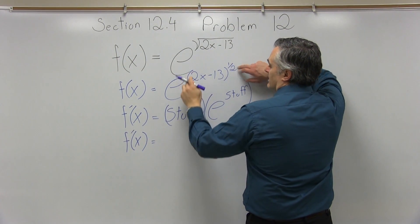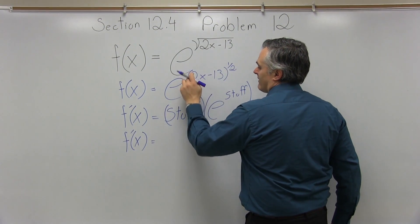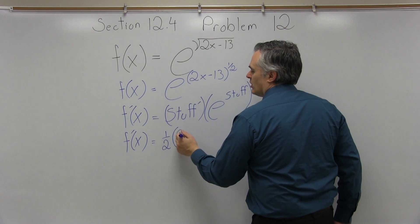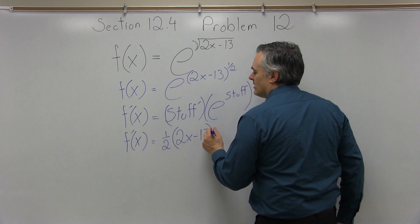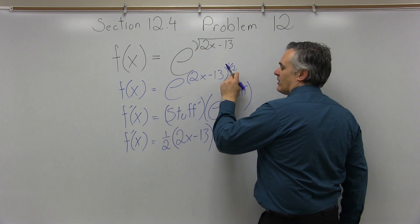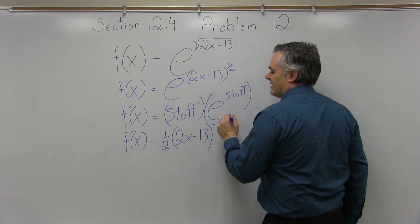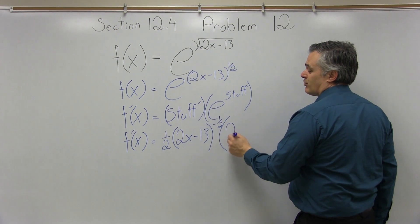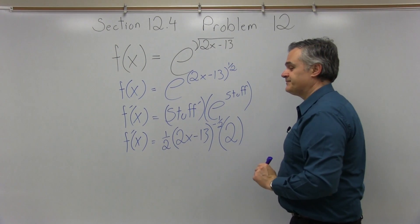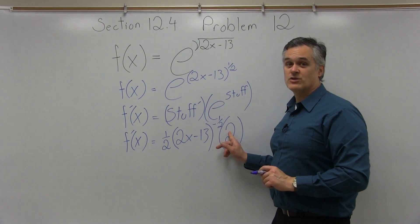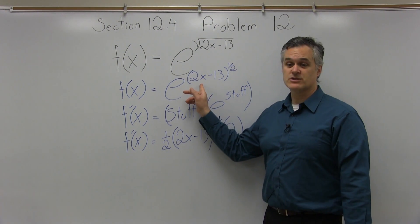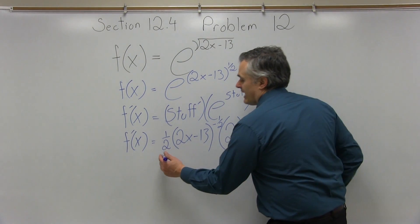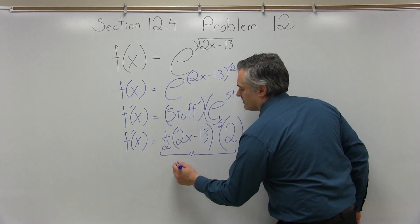So, f prime of x equals, my exponent is going to come down in front of the stuff. So the 1 half comes in front. We're going to leave the stuff the same, 2x minus 13. We're going to reduce the exponent by 1, so it'll become minus 1 half, and then times stuff prime. So the stuff being 2x minus 13, the stuff prime is just 2. Right, the 2x gave me the 2. Whenever I have an x to the first power, the derivative is whatever the number in front is, just 2. The minus 13, because it had no x, its derivative is 0.